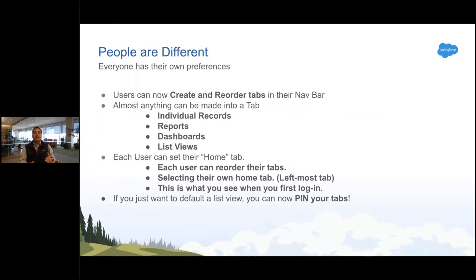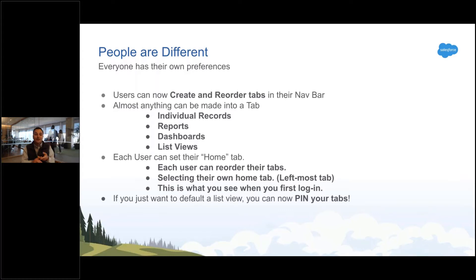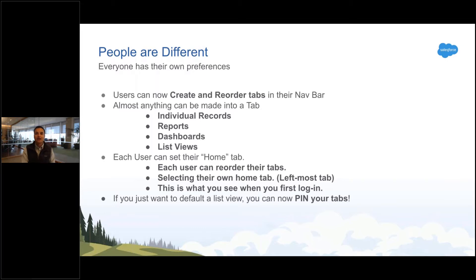Customizing your nav bar. You as an admin can create whatever tabs you want, but this lets users create their own tabs and reorder the tabs. They can make any record, any report, any dashboard, or any list view into its own tab. Whatever tab they move all the way to the left becomes their home page when they log in.